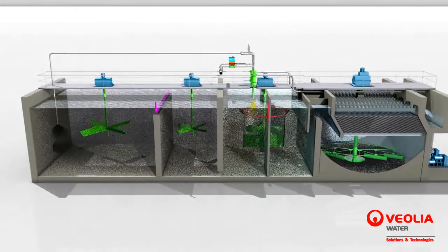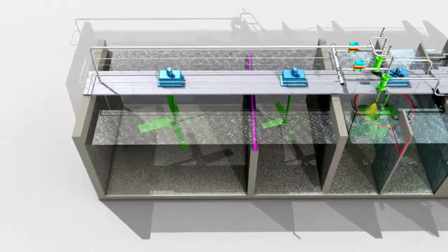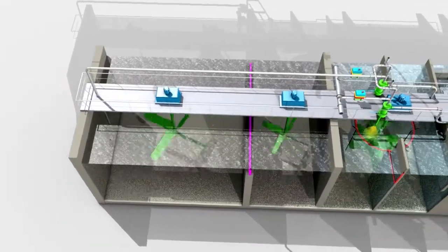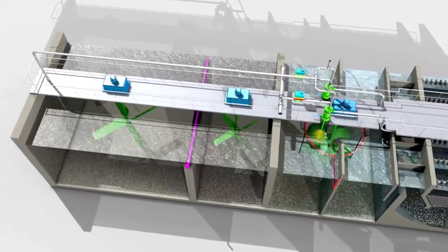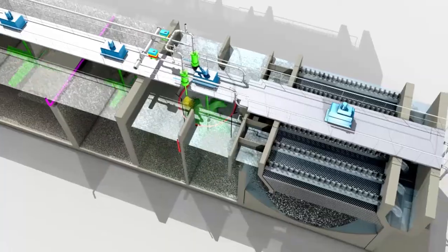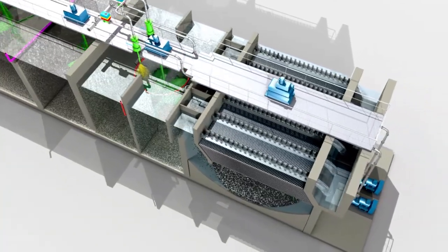Actiflo carb ensures the production of drinking water of very high quality. It is ideal for the treatment of varying polluted raw waters and makes it possible to achieve up to 95% removal of non-flocculable refractory compounds, including the precursors of disinfection by-products.